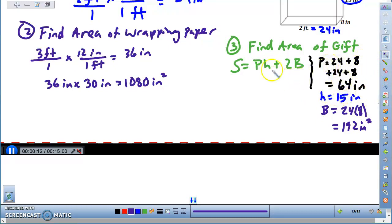So I'm going to take all these values and plug them in over here. And I get the perimeter, which is 64, times the height, which is 15, plus 2 times the area of the base, 2 times 192.